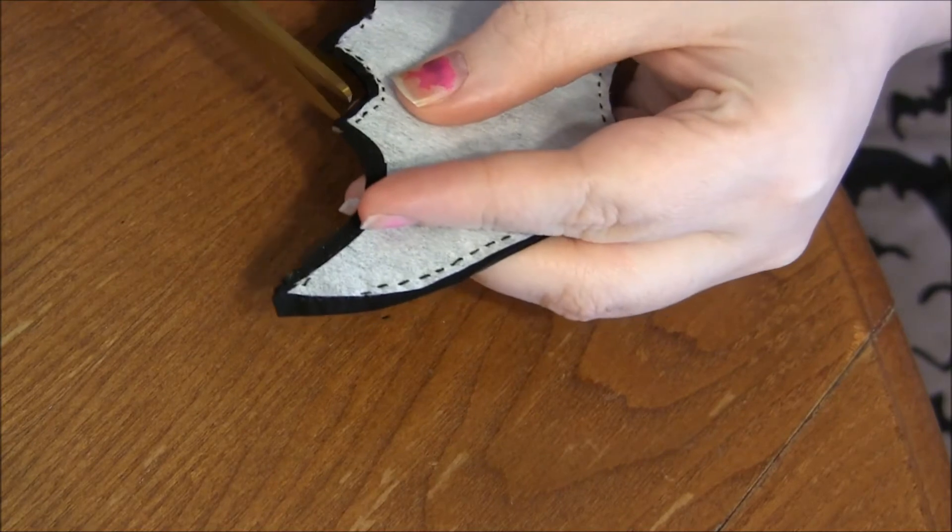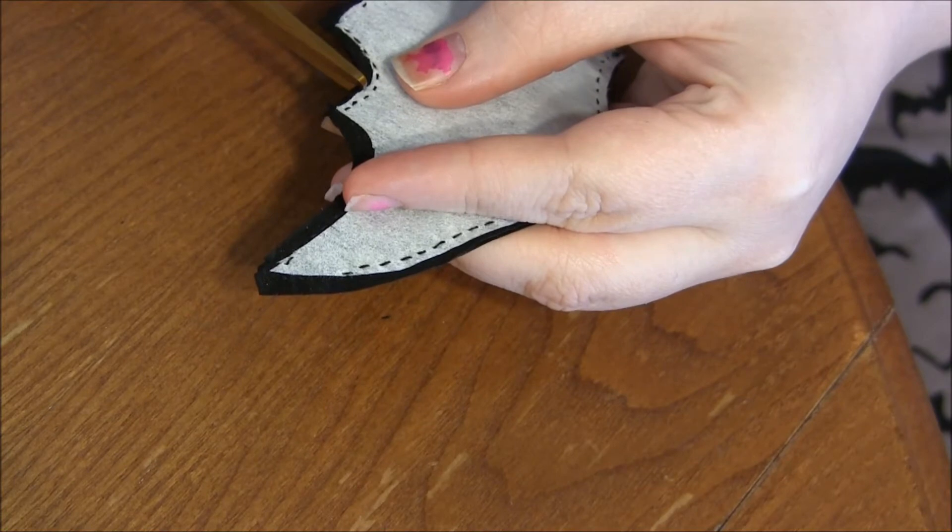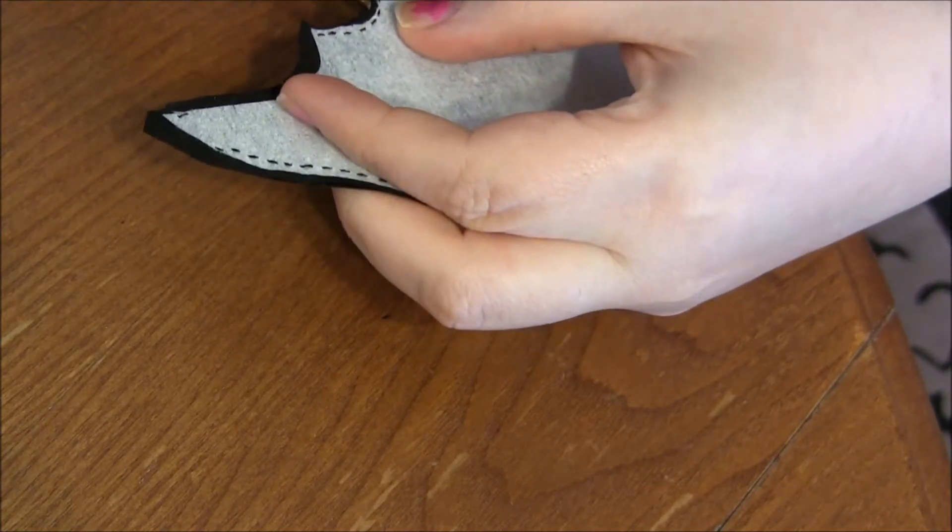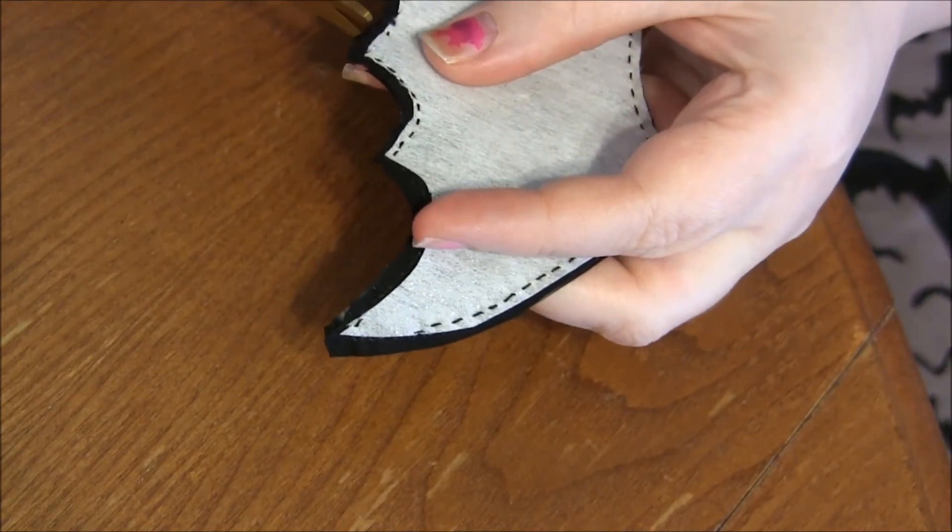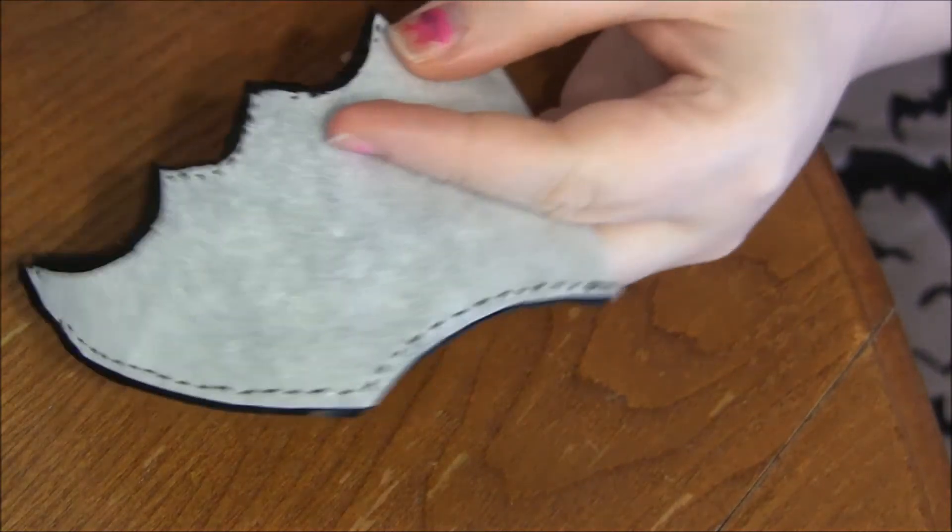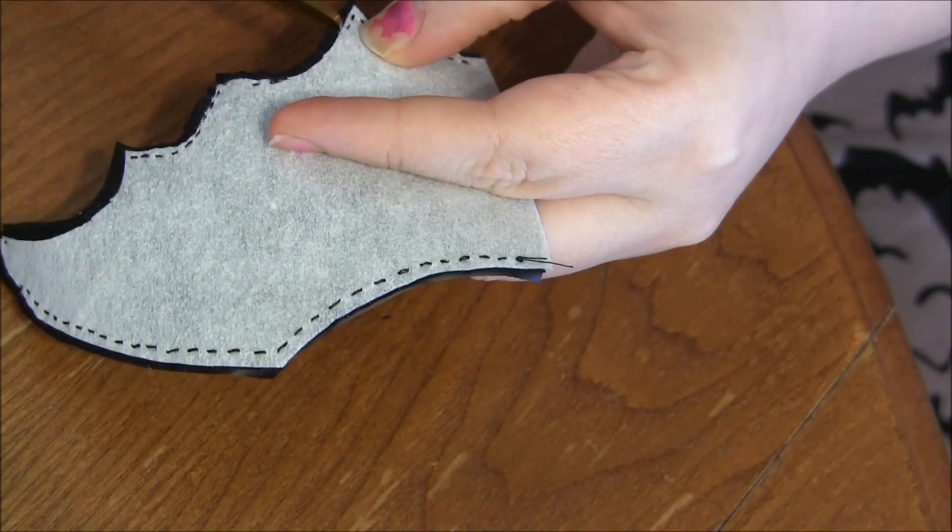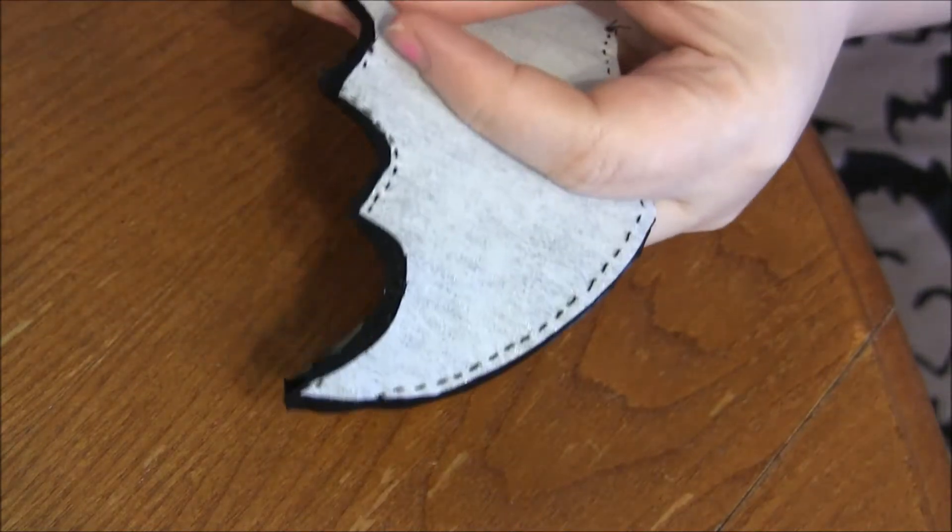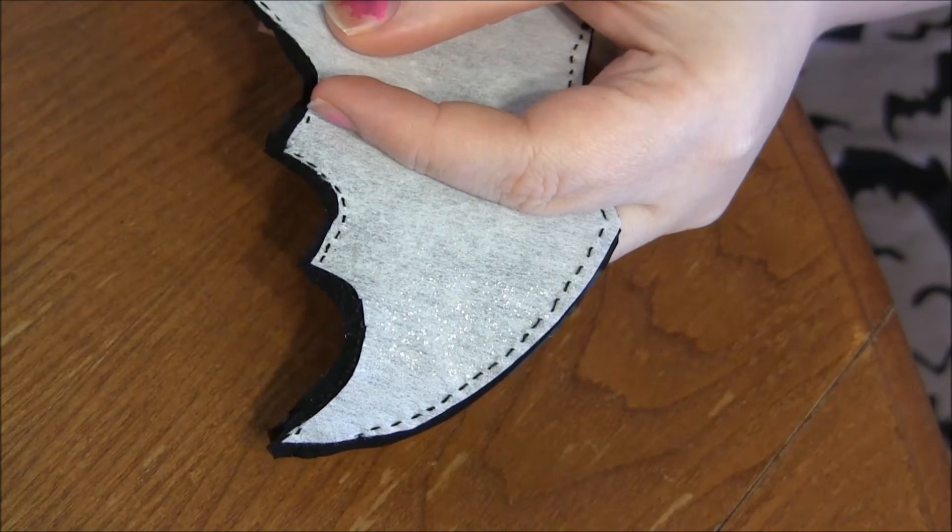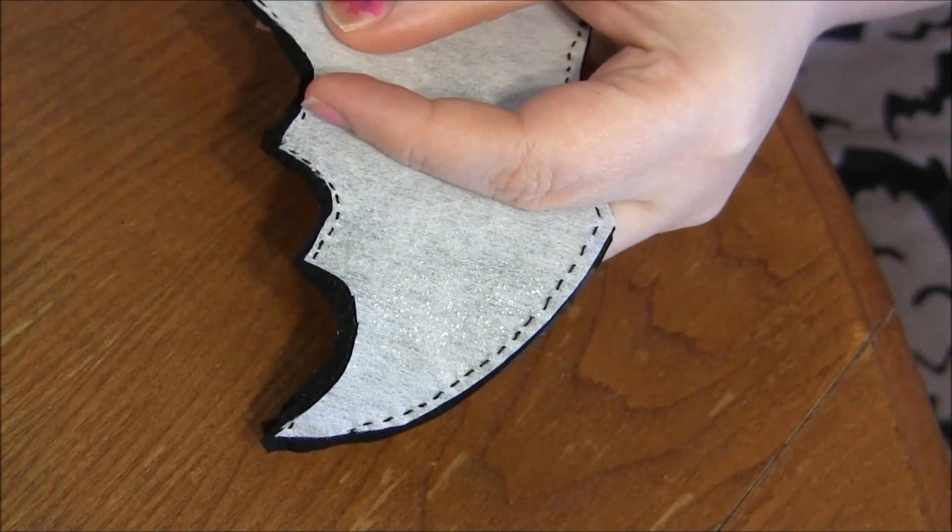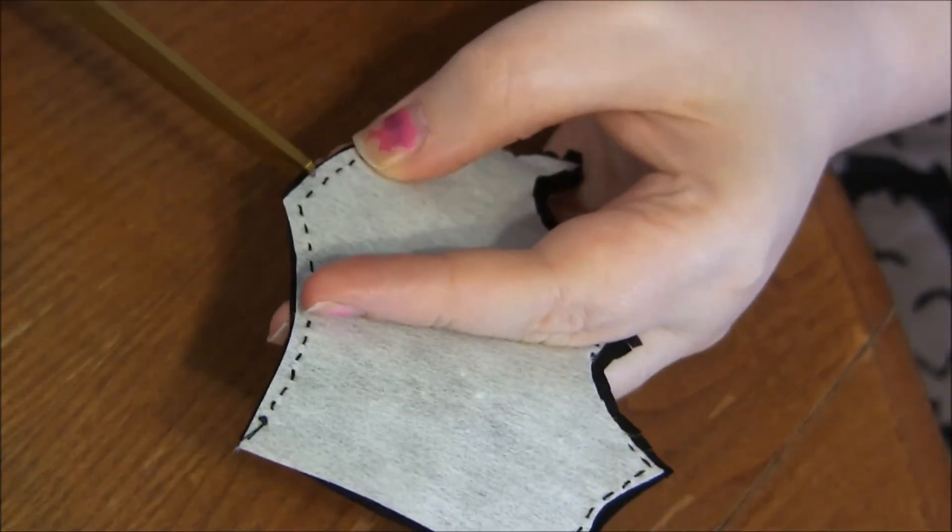Cut little slits around the curved areas and the tips that you have here. You don't have to have bunches, this doesn't have to be exact, but it will help give it its shape. If you sewed close to the edge like I did, just be very careful when cutting your little slits.